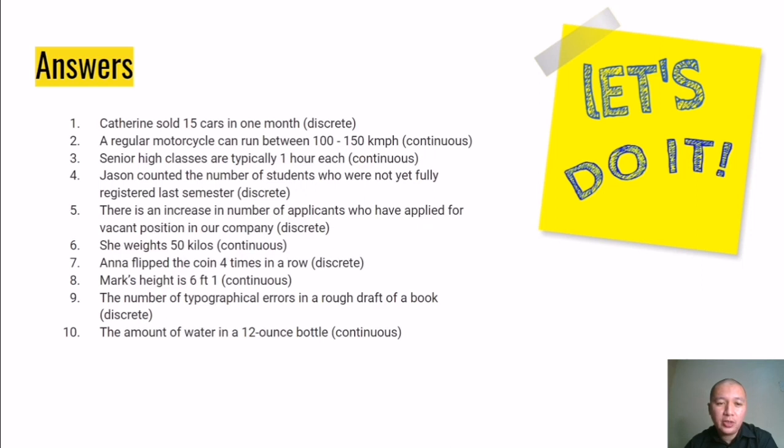Here are the answers to the questions that we had earlier. Catherine sold 15 cars in one month is an example of a discrete variable because it talks of a specific number, 15. A regular motorcycle can run between 100 to 150 kilometers per hour. It is continuous because it talks of distance.